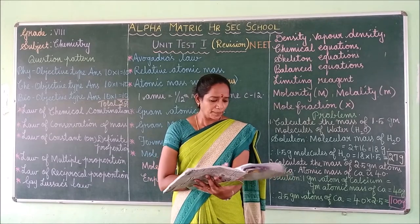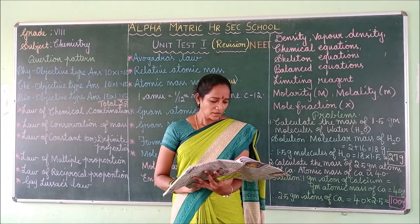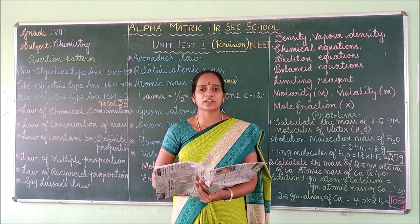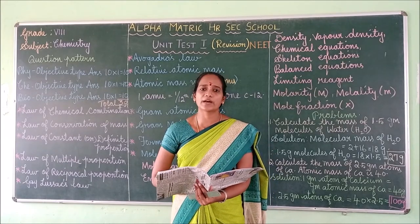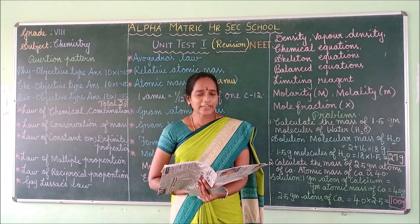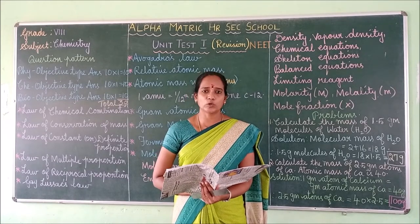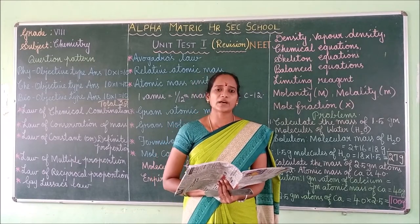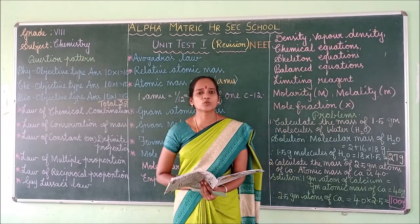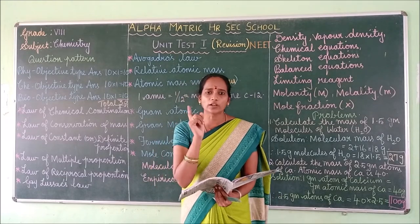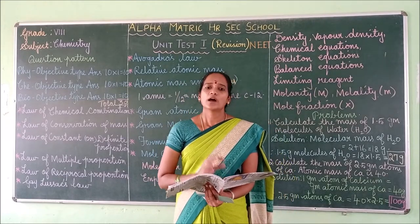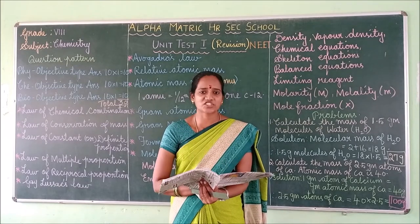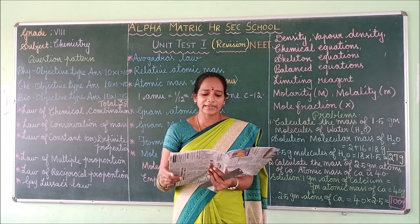Come to page number eight. In page number eight, definitions are given. Learn the relative atomic mass as well as atomic mass unit (AMU). One atomic mass unit is equal to one-twelfth the mass of one carbon-12 atom. And one AMU is also known as one Dalton. Learn the definition.